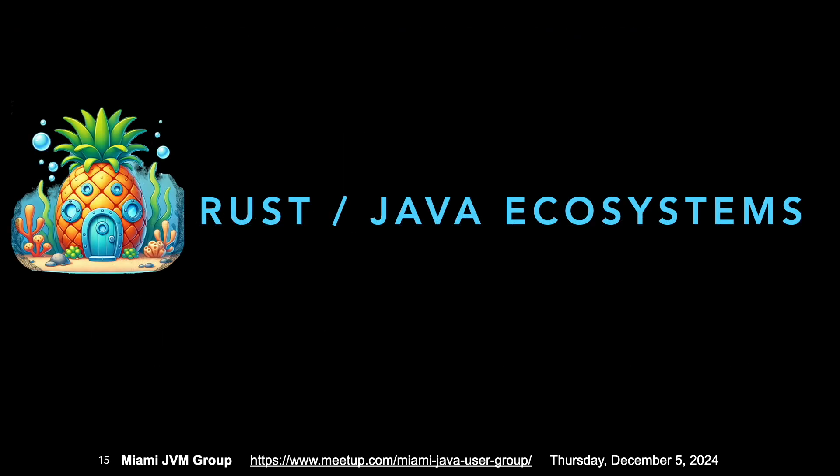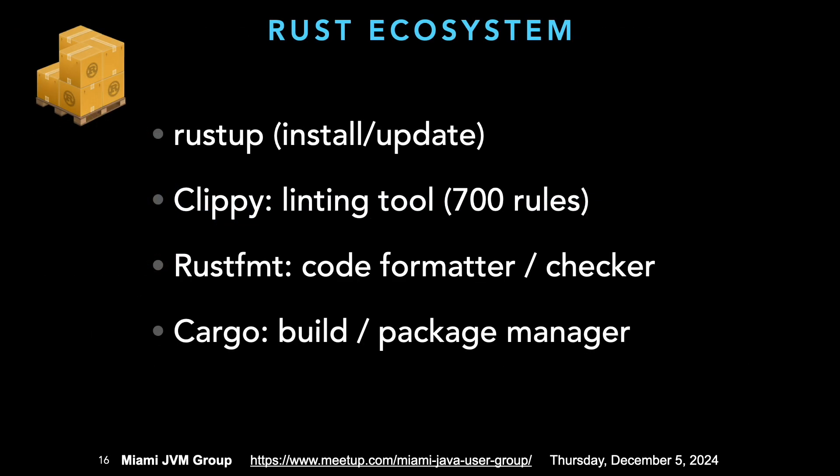Let's take a look at the Rust-Java ecosystems. We have RustUp, which is the installer and updater — really simple and easy to use. Part of the love for Rust is how easy it is to update. It has linting tools called Clippy, which has all these rules used during compile time. Rust as a language is very opinionated about coding style. It has a code formatter and checker that allows you to reformat code to the preferred style. The build and package manager is called Cargo.